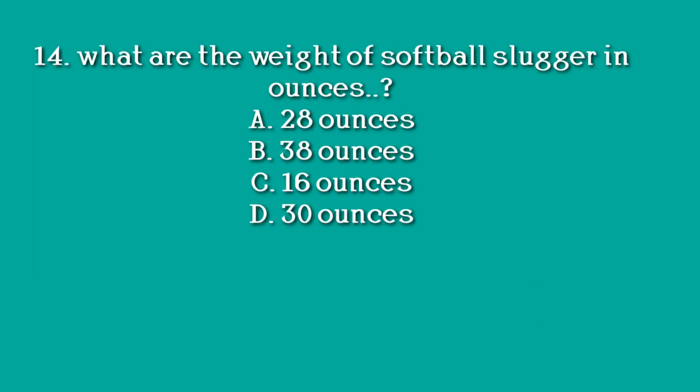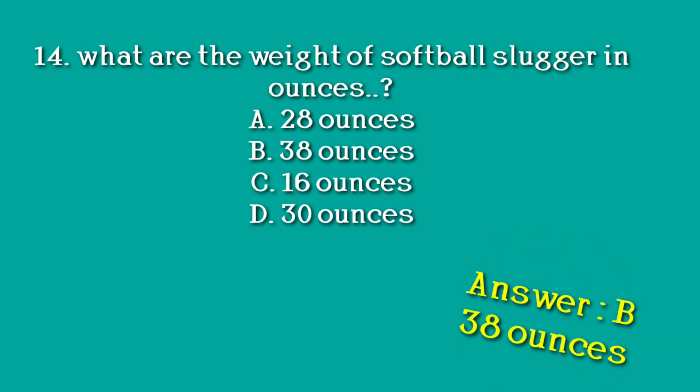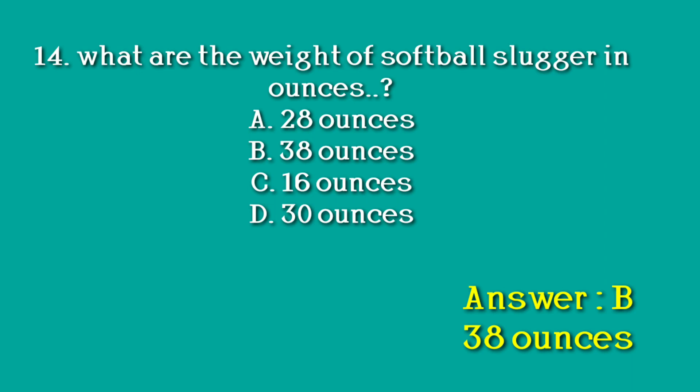Question number 14: What is the weight of the softball slugger in ounces? Option A. 28 ounces. Option B. 38 ounces. Option C. 16 ounces. Option D. 30 ounces. Answer: B. 38 ounces.